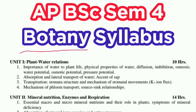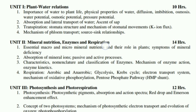Unit 1: Plant Water Relations. First topic — importance of water to plant life, physical properties of water, diffusion, imbibition, osmosis, water potential, osmotic potential, pressure potential. Second topic — absorption and lateral transport of water, ascent of sap. Third — transpiration, very important topic, stomata structure and mechanism of stomatal movements. Fourth topic — mechanism of phloem transport, sources and sink relations.